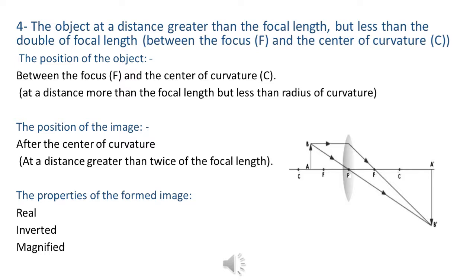When the object is at a distance greater than the focal length but less than double the focal length, it means the object is between the focus and the center. The image is formed after the center, at a distance greater than double the focal length. The properties of the image: real, inverted, and magnified.